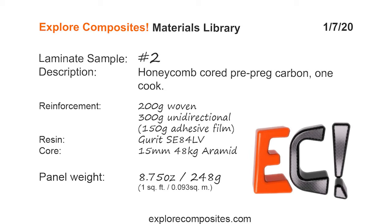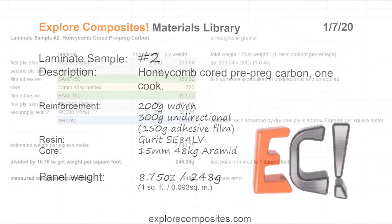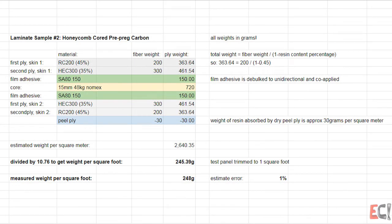Welcome to the Explore Composites materials library. This is laminate sample number two. This one's a honeycomb core prepreg panel with 15 millimeter Nomex core and 200 gram woven skins and a single ply of 300 gram unidirectional.